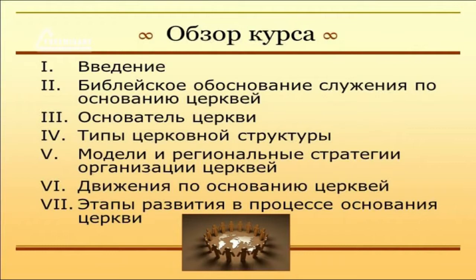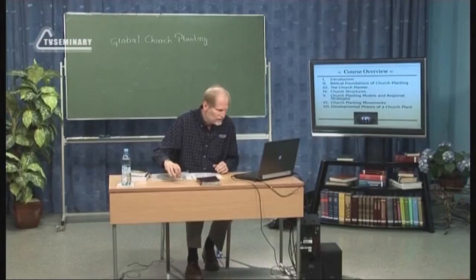Переходим к следующему разделу нашего курса — «Главные этапы основания церкви». Мы посмотрим, какие фазы, о которых должен знать основатель, проходит в своем развитии новая община. Ведь на каждом этапе ему предстоит решать свои совершенно определенные задачи. Вот примерный перечень моментов, которые нам следует учесть. Он включает в себя потенциальные опасности и возможные трудности на пути становления церкви.